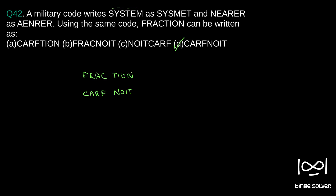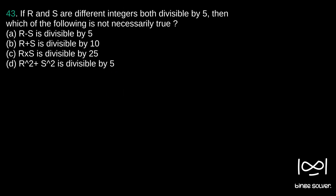Next question, question 43. If R and S are different integers, both divisible by 5, then which of the following is not necessarily true?